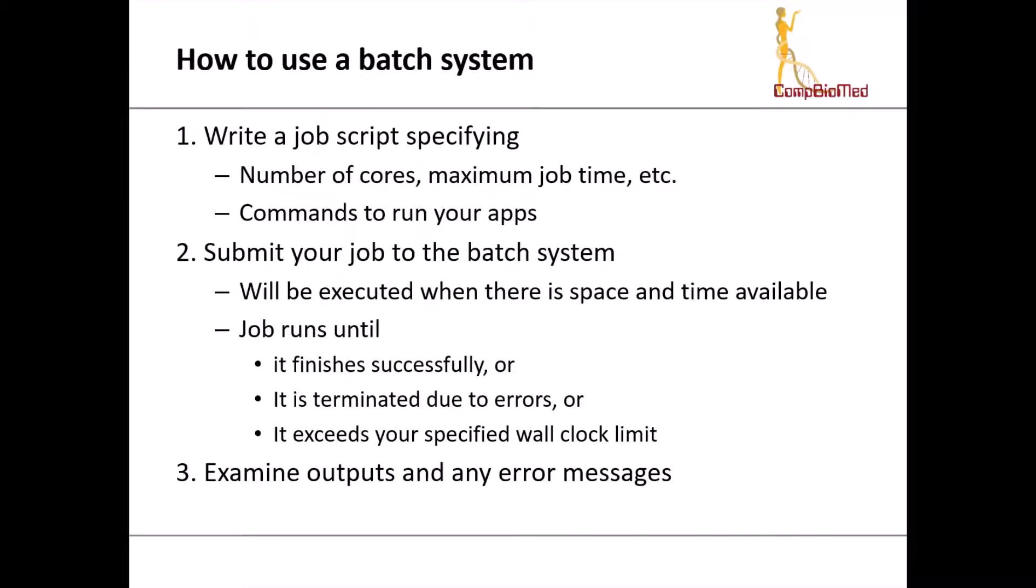So how do you use a batch system? There's three steps to it. First is to write a job script, where you specify the number of cores, maximum job wall clock time, and the commands that you want to run once these resources are allocated to you. The second thing is you submit this job script to the batch system. It'll be executed whenever the resources become available. Now that script or job will run until either it finishes successfully, or it's terminated because of errors, so it crashes, or it runs so long that it hits the maximum wall clock limit that you gave in your batch script. The last step is just to examine the output or any error messages from the job.